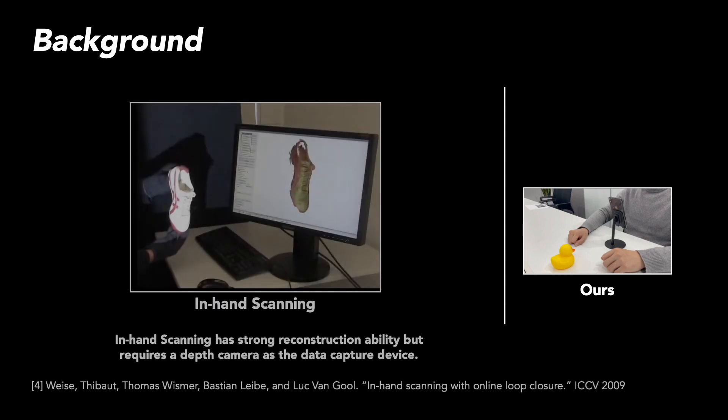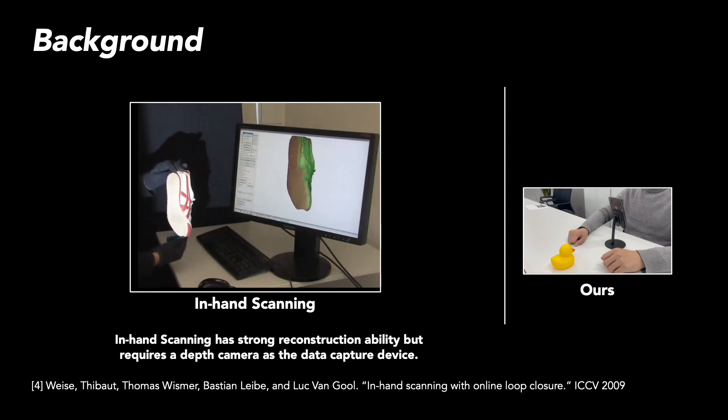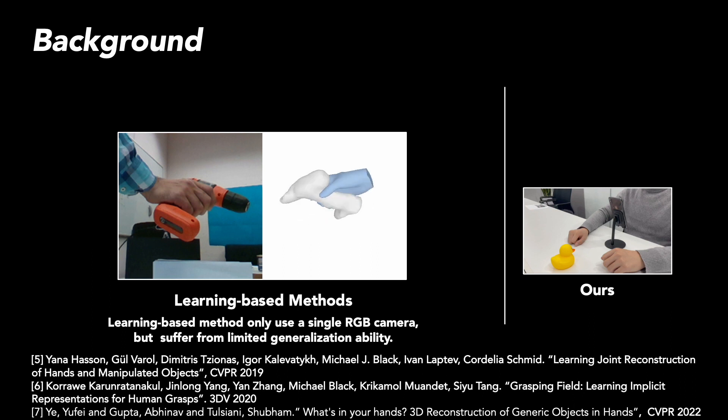Some works follow a similar in-hand reconstruction setting. Enhanced scanning has strong reconstruction ability but requires a depth camera as the data capture device. Learning-based methods only use a single RGB camera but suffer from limited generalization ability.